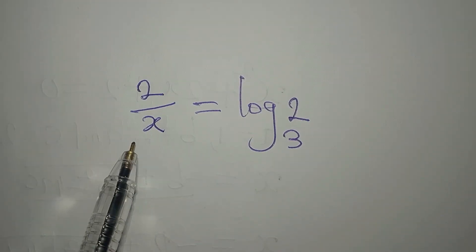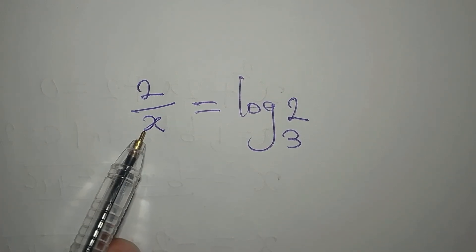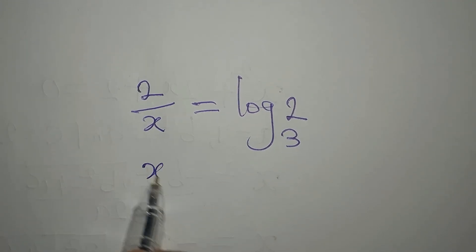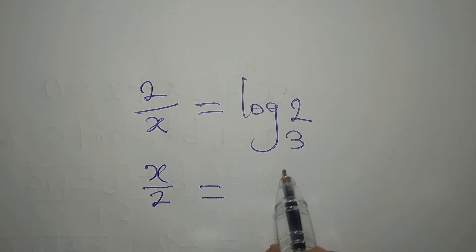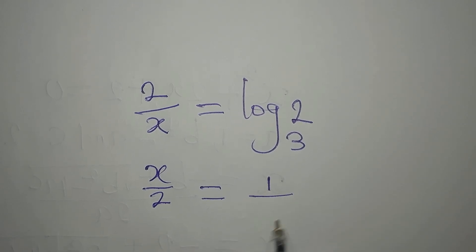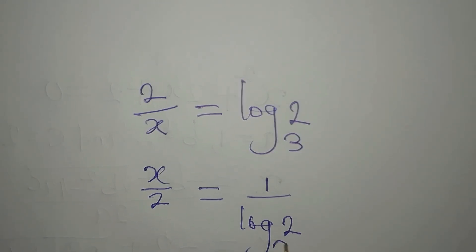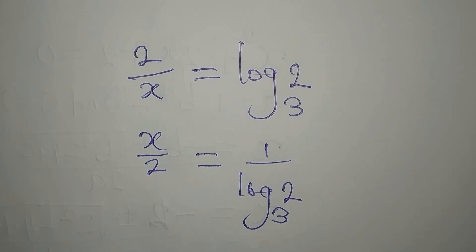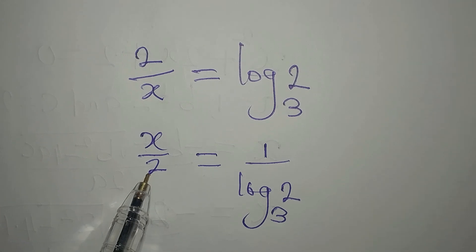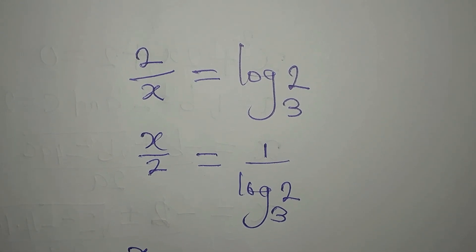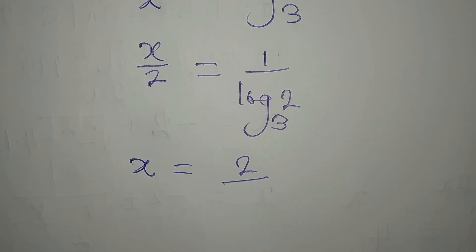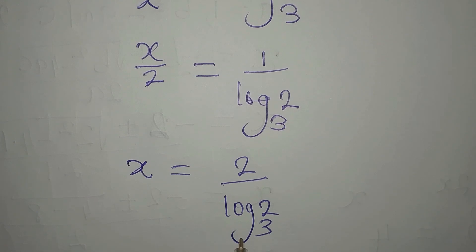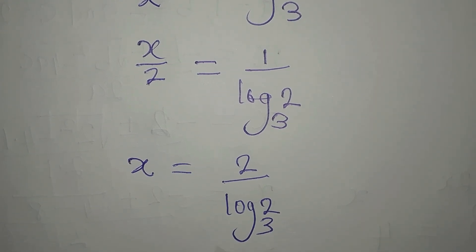From here we are looking for the value of x. We can turn this around so we get x over 2 equals 1 over log 2 to the base of 3. The next thing is to cross multiply, so that 2 will multiply that and x will be 2 over log of 2 to base 3. This right here is the value of x that would satisfy the equation.